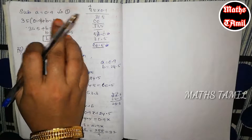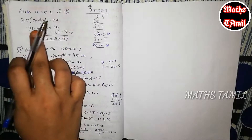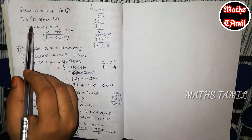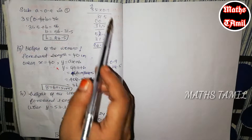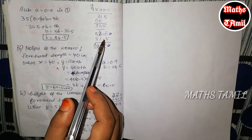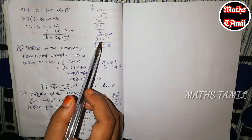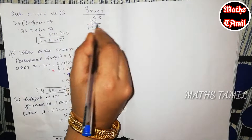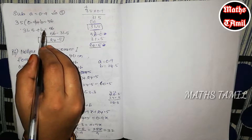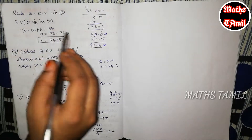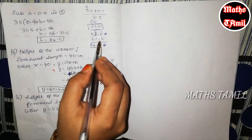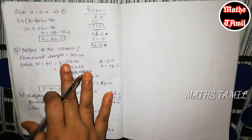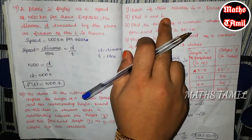Next, substitute a into equation 1. The answer is 35 into 0.9, which equals 31.5. So, plus b is equal to 56. Then, 56 minus 31.5 gives us the value of b. So we find the b value.